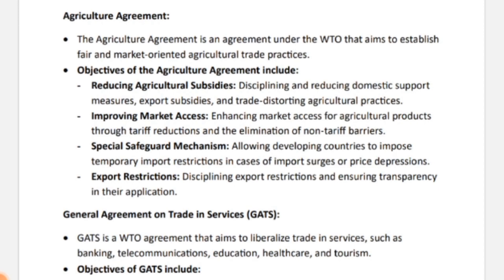First, we come to the Agriculture Agreement. This agreement falls under the WTO — the World Trade Organization. Its aim was that trade should be fair and market-oriented, so that you can access the market as much as possible. The first objective of the Agriculture Agreement was reducing agricultural subsidies — reducing domestic support measures and export subsidies, and eliminating agricultural practices that distort trade.